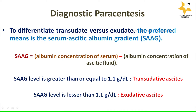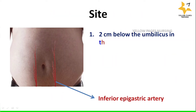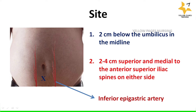Discussing the site of the procedure, it is 2 cm below the umbilicus in the midline, or 2-4 cm superior and medial to the anterior superior iliac spines on either side. You can also visualize the positions of the inferior epigastric artery in this picture.